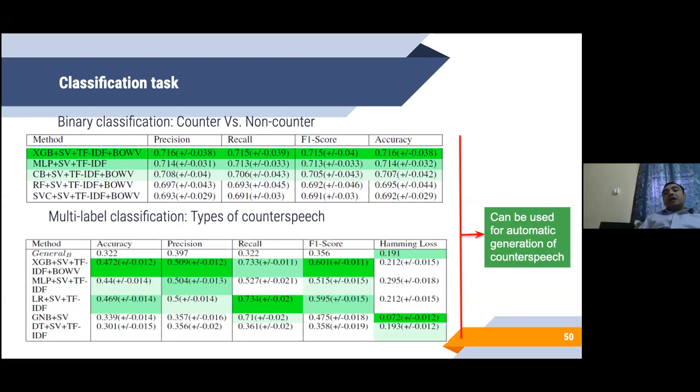The question could be, why do we need such a classification? The basic need would be if you want to automatically generate counter speech. It is a difficult exercise to have people or NGO workers to actually type and generate counter speech to stop this spread of hateful messages. It would be very helpful if you could have computers automatically or computationally generate counter speech. The first stage to do that would be to have an automatic classification system like the one we have developed.